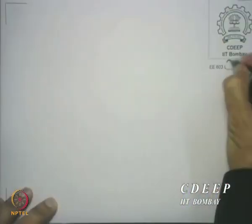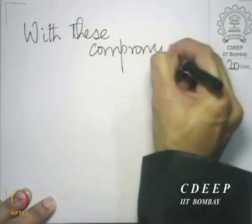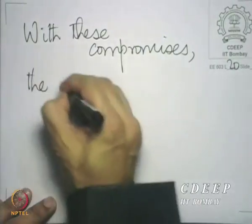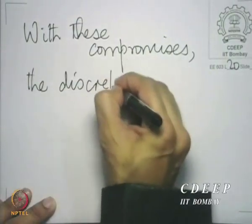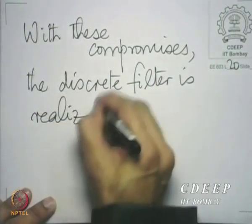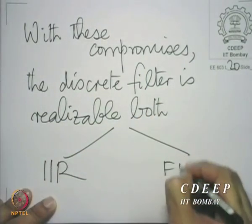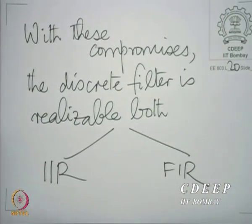So, with these compromises, the discrete filter is realizable. In fact, the good thing is it is realizable both as IIR and FIR — that is, you could realize it by using a finite impulse response system or an infinite impulse response system. You have the choice between the two.